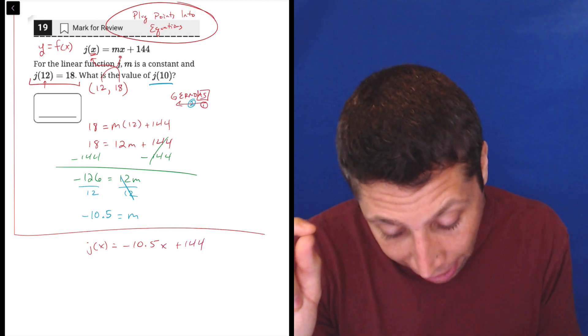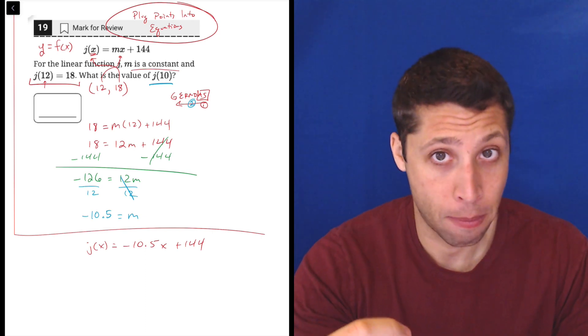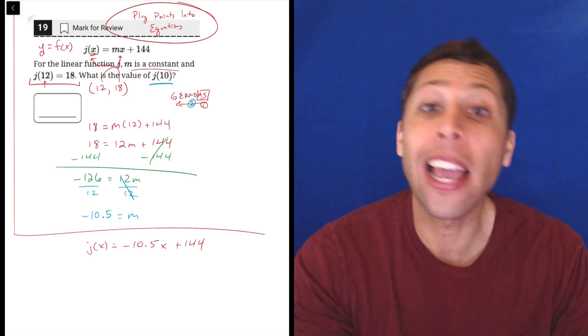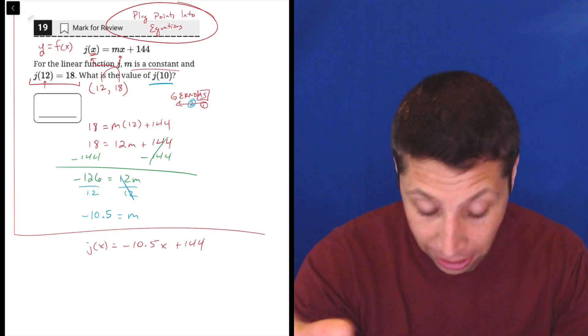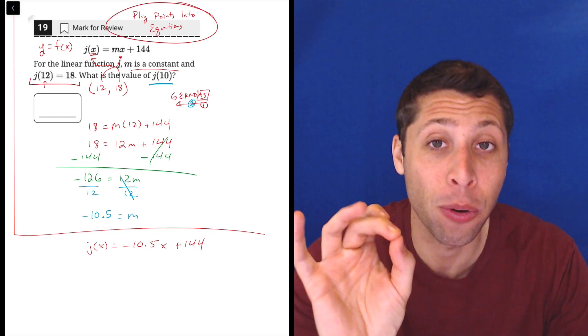Because notice what they said originally, m is a constant. That means that m is a specific number, but that number doesn't change. Once we have it, it's the same, right? So that's why I'm able to just plug it in. Even though now we're going to use different numbers in x and y, we're going to have the same value of m.